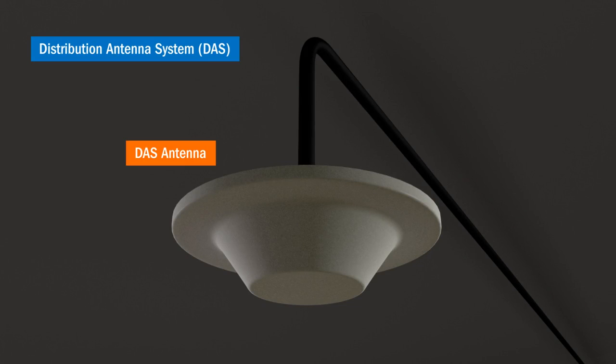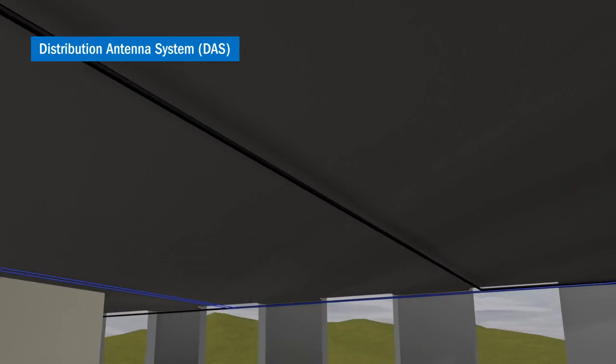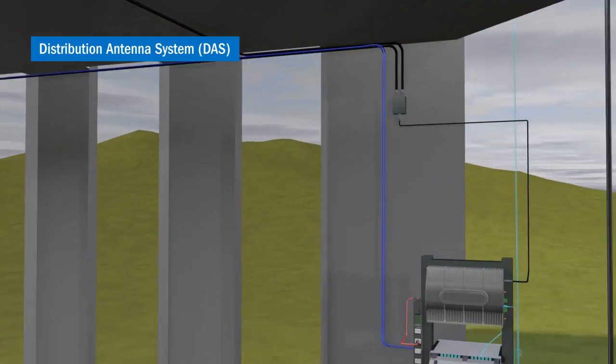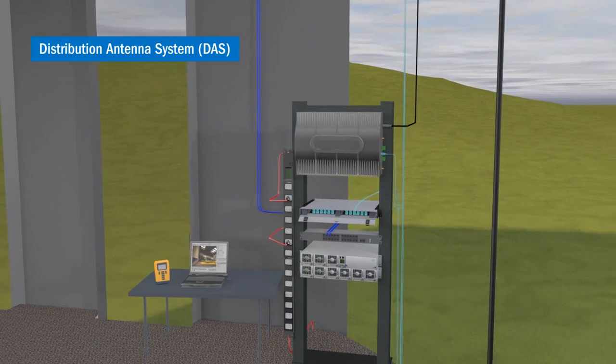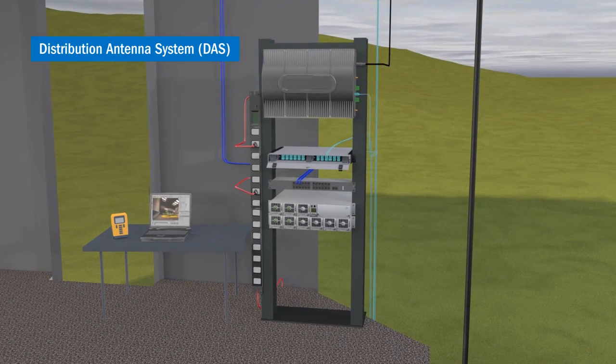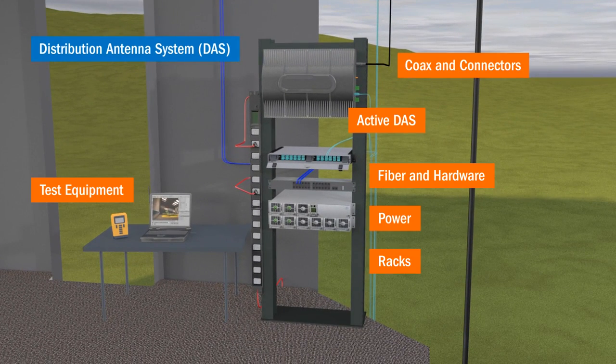What is DAS? A distributed antenna system, or DAS, is a series of small antennas placed within a building to improve poor cellular coverage.